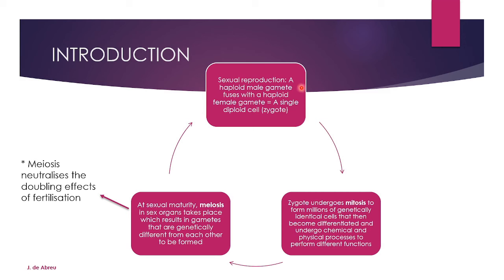We start with sexual reproduction. A haploid male gamete fuses with a haploid female gamete — that's fertilization — and this forms a single diploid cell called a zygote. This one single diploid cell then undergoes mitosis, dividing to form genetically identical cells, because mitosis forms identical cells.